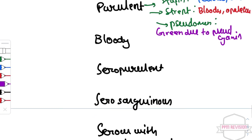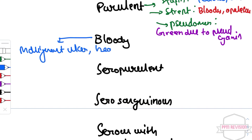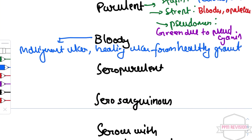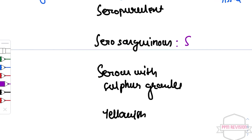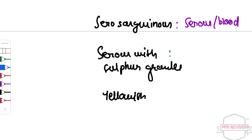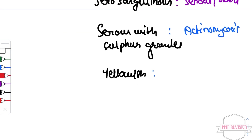Bloody discharge is present in malignant ulcers and also in healing ulcers from healthy granulation tissue. Next, seropurulent discharge. Serosanguinous is nothing but serous and blood. Serous with sulphur granules indicates actinomycosis. Yellowish discharge is associated with tuberculous ulcer.